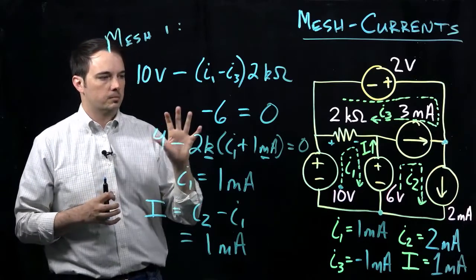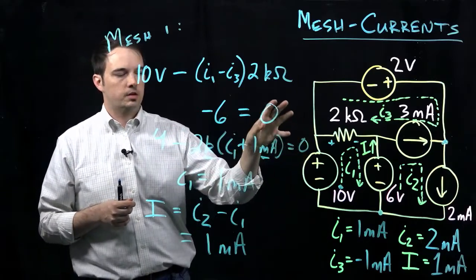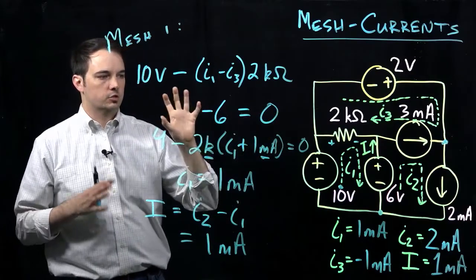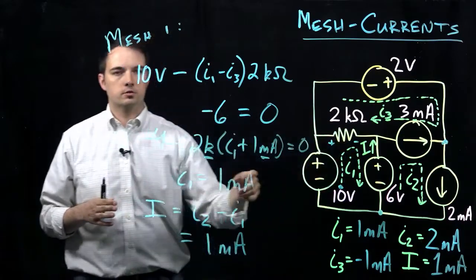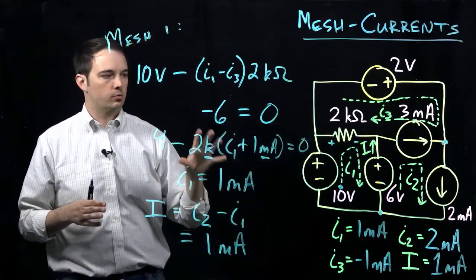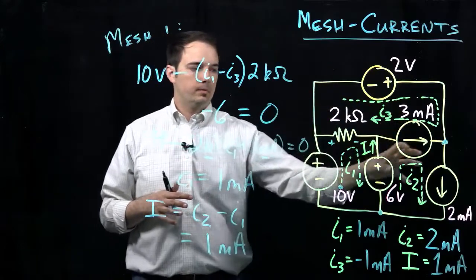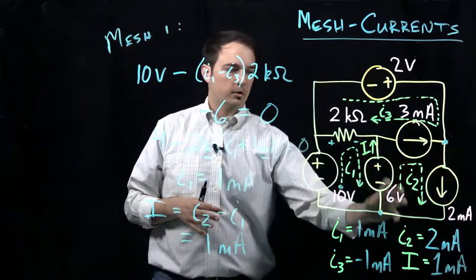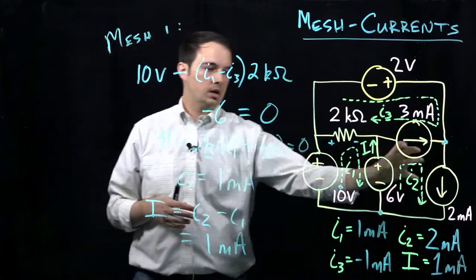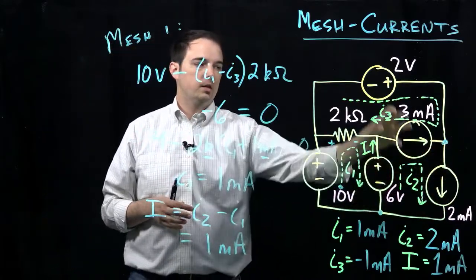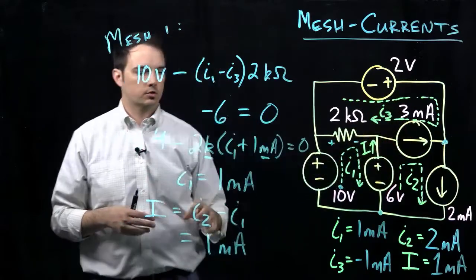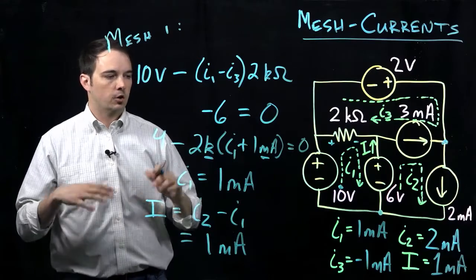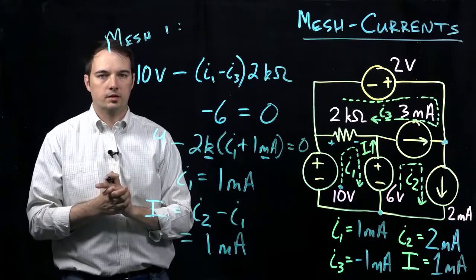But here again, the main things to note is there were a couple of really key shortcuts that were important in the very beginning. Instead of just looking at a problem and immediately trying to write mesh equations around every given mesh, you want to look and see if there are certain elements that will make your life a lot easier, such as immediately recognizing that mesh current I2 had to be the same as my source, and then from there relating I2 and I3 through this source really saved us a lot of time and effort. I hope you enjoyed that and learned something, and I hope to see you in the next video.